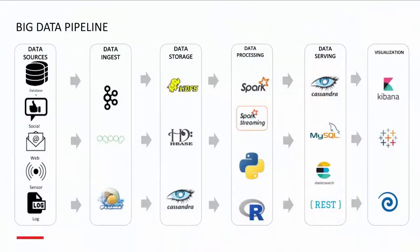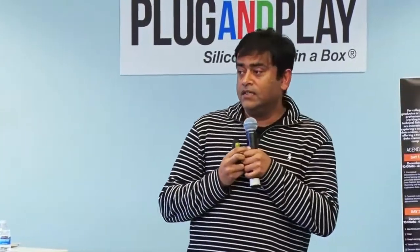Big data sources include social media, sensor data, log data, and relational data. This data is often captured through processes like Kafka. Kafka is probably the most popular data ingestion tool — it's a messaging program that captures data and forwards it to other programs. Kafka uses topics: a producer writes to a topic and a consumer listens to a topic. That's how data gets moved — also tools like Scoop and Flume work similarly.